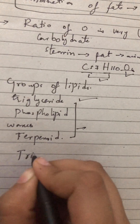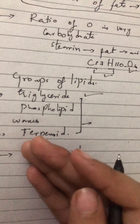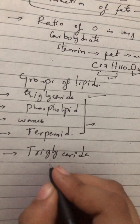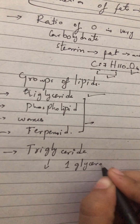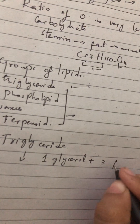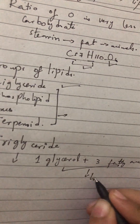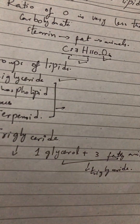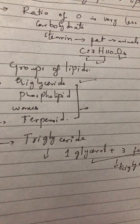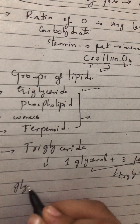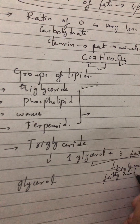Now let's talk about triglycerides. Triglycerides are fats. In terms of composition, one molecule of glycerol plus three molecules of fatty acid make a triglyceride. We will see how this works by looking at the glycerol and fatty acid structures.